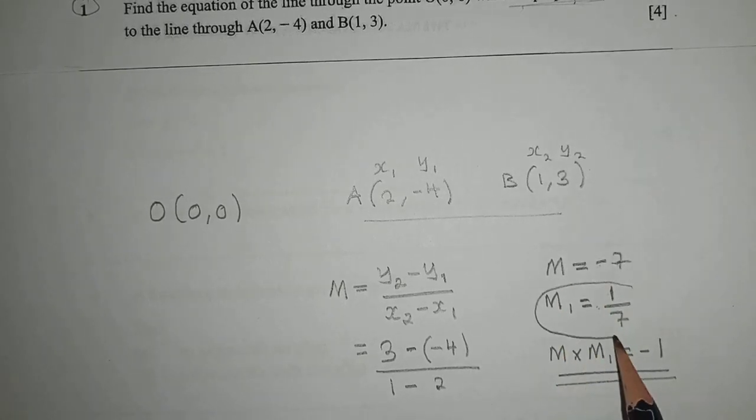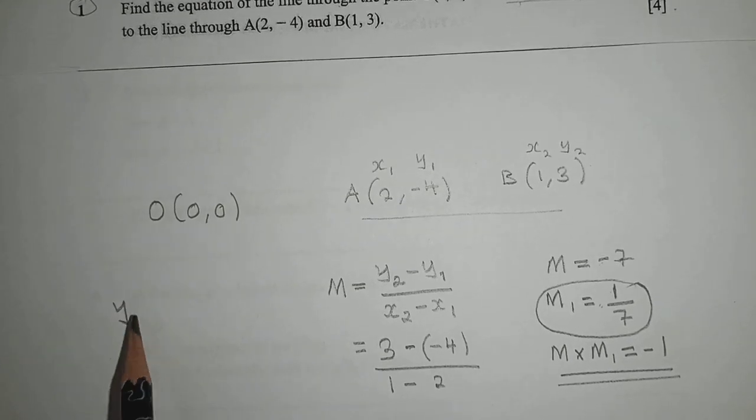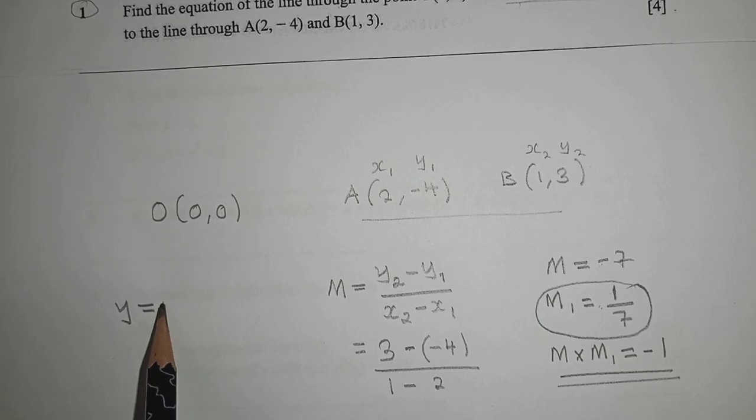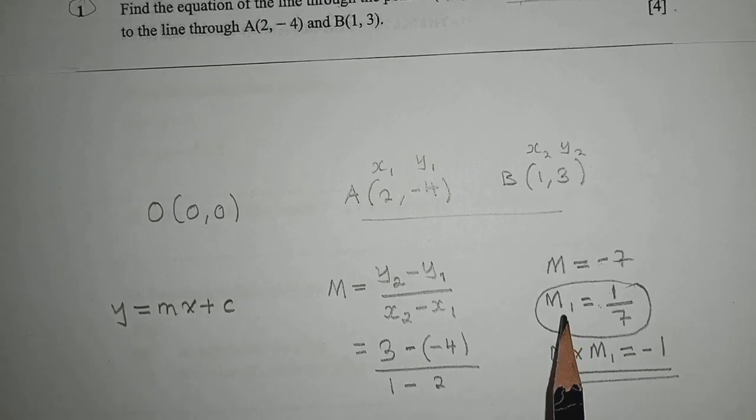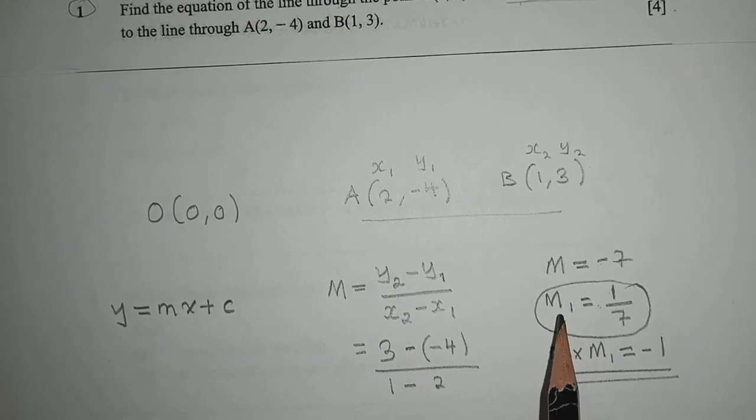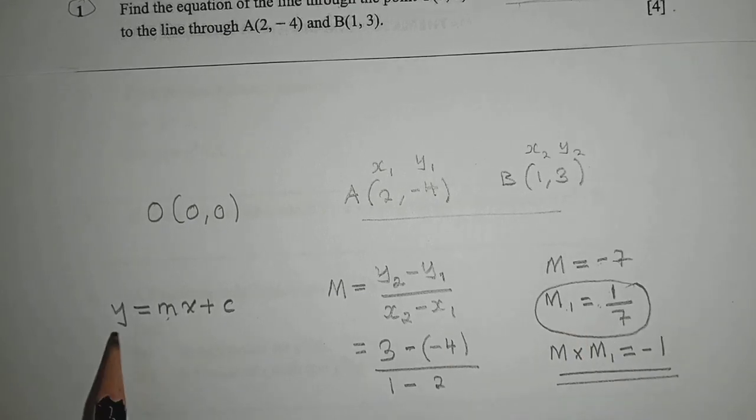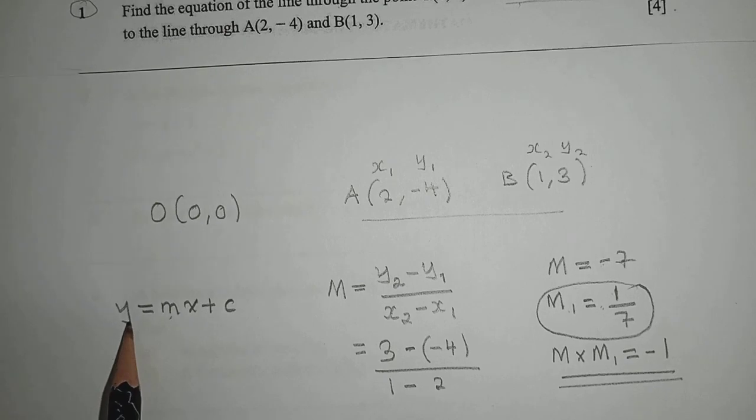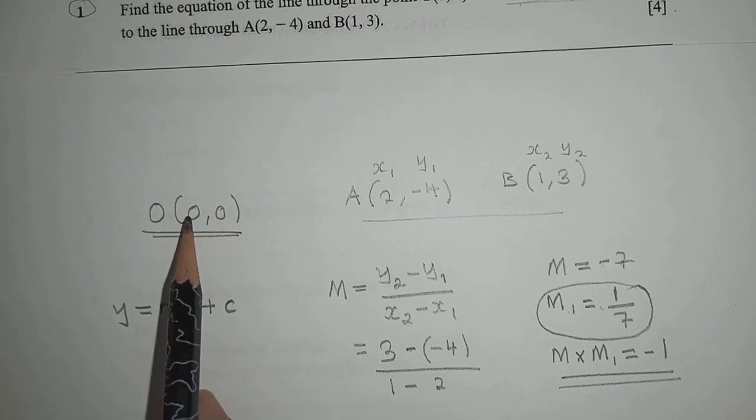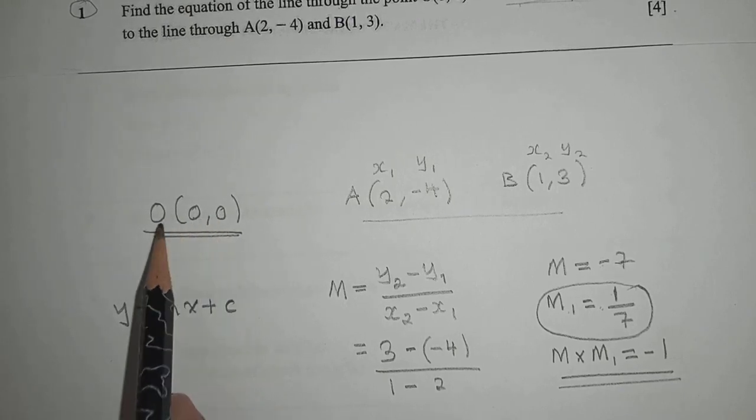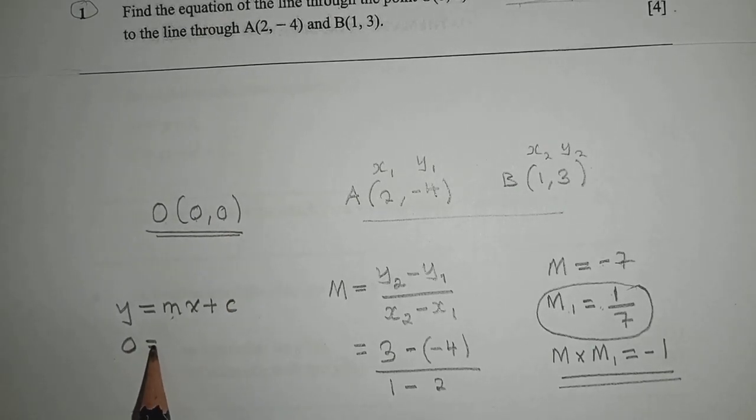Now we use the formula for finding the equation of a straight line: y equals mx plus c. Our m is the new gradient m1, which is 1/7. We get our y and x from point O, so both are 0. Substituting: 0 equals 1/7 times 0 plus c.